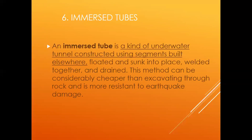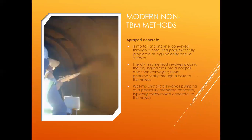The sixth method is immersed tubes — a kind of underwater tunnel constructed using segments built elsewhere. Beyond these six, there are also modern and non-TBM methods. Not everyone can have a massive machine for tunneling; sometimes you just want a small tunnel or need to do it by hand.